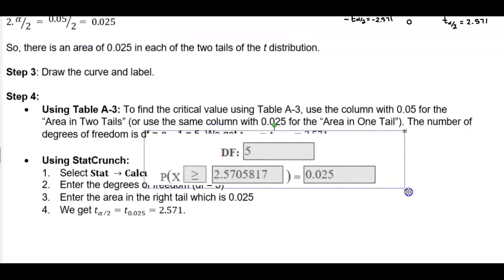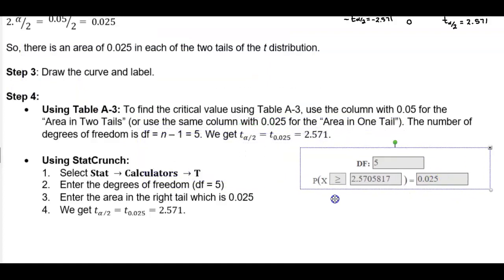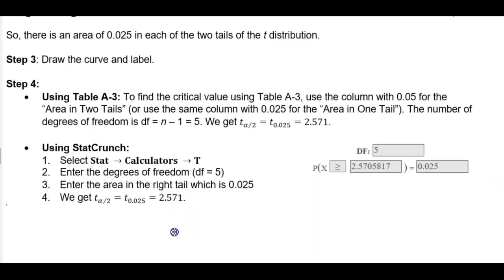As you can see, if we round that critical value to three decimal places, we get 2.571. That's how we're getting 2.571.